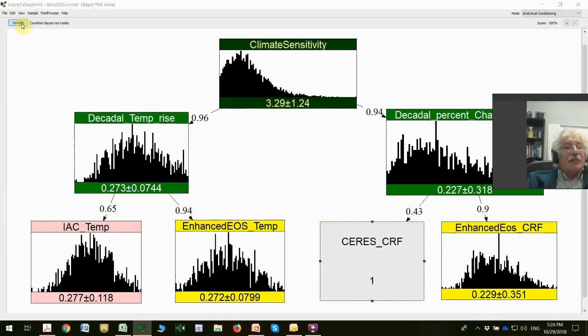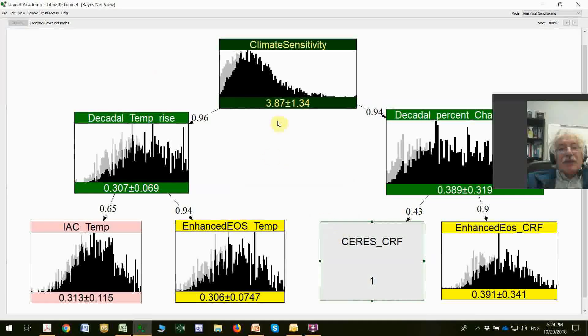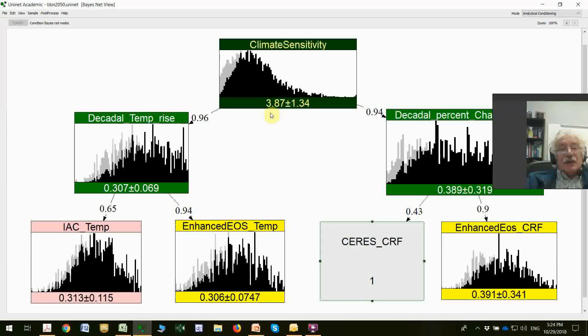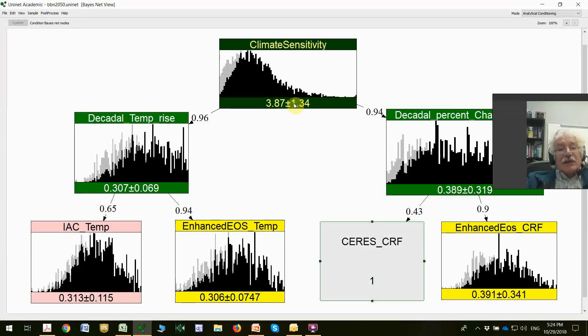That's simply a question of updating this distribution on that information. We find that equilibrium climate sensitivity in expectation is now 3.87. It's gone up a fair amount. The standard deviation has also gone up from 1.24 to 1.34. After this measurement, after having seen the value of 1, we are actually more uncertain about the predicted value for climate sensitivity than we were before.